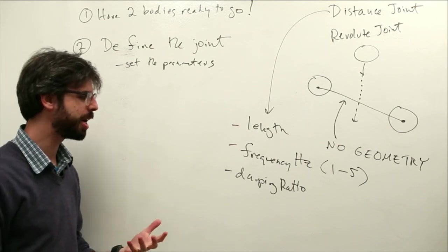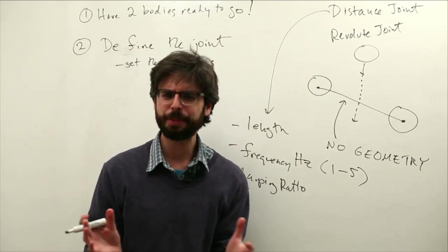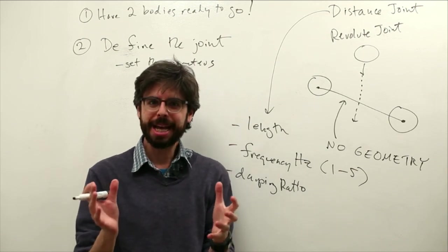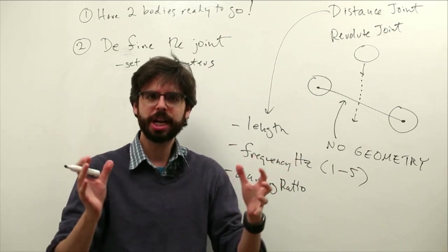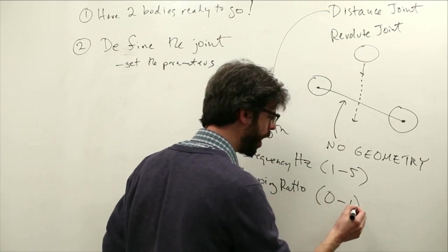Damping ratio you can think of as, it affects also the springiness, and you can think of damping as what causes a spring to come to rest. And these are typically numbers between zero and one.